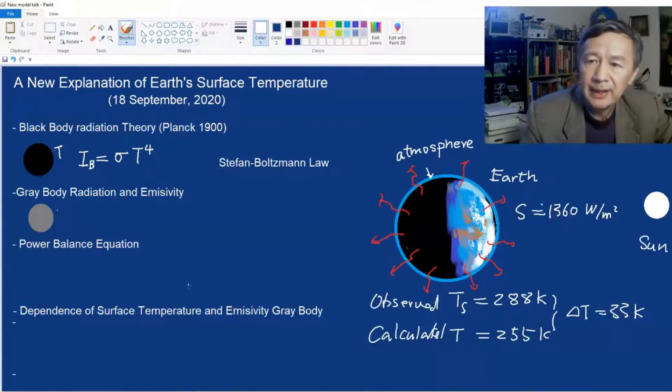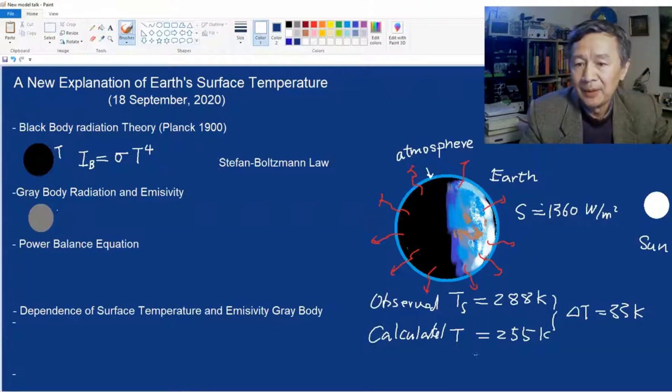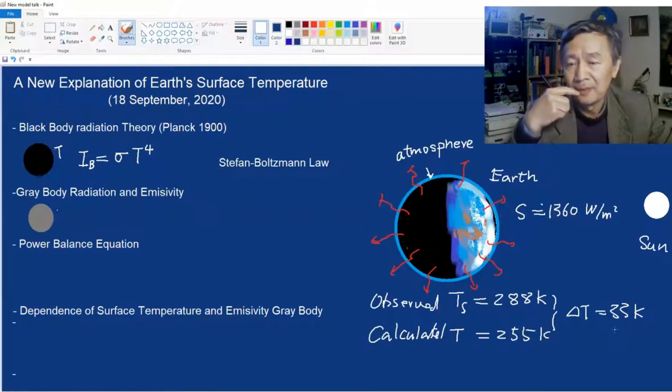For many years, people have used black body to describe both the Sun and the Earth in attempt to calculate the surface temperature theoretically. But unfortunately, there is always some apparent discrepancy. To be specific, the observed surface temperature is about 288 K, while the calculated temperature is only 255 K. So the discrepancy in temperature is 33 K. So it was a big trouble in theory.